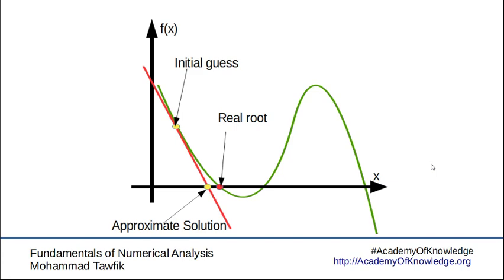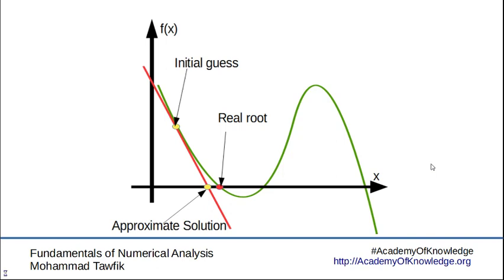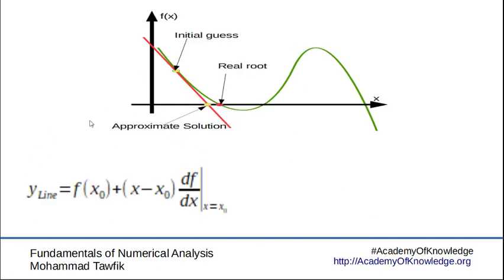The most famous of these open methods is the Newton-Raphson method. It is a straightforward method that starts with an initial guess. If you have a continuous function that has a root, you start with an initial guess of the solution. You can also evaluate the slope of the function at that point. Now you have a slope and a point — having those two pieces of information can provide you with an equation for a line.